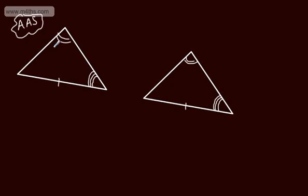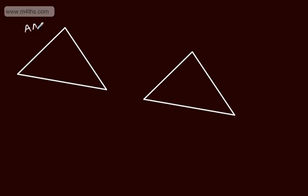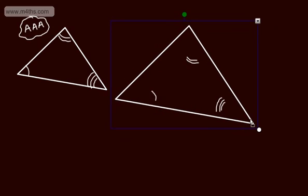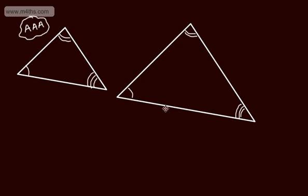Often in this topic, it's easier thinking about what doesn't prove congruency rather than remembering what does. The first one that doesn't is Angle-Angle-Angle (AAA) — three pairs of corresponding angles are the same. The reason this doesn't work is because we could enlarge this triangle. We would have the same size angles but we've got similar triangles. Angle-Angle-Angle is a proof of similarity rather than congruency, so just be careful — this is not a test for congruency, it just shows that triangles are similar.